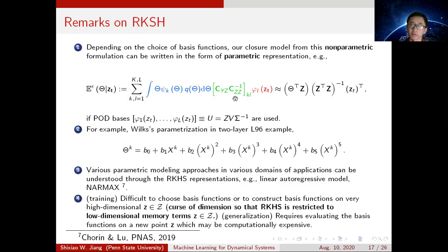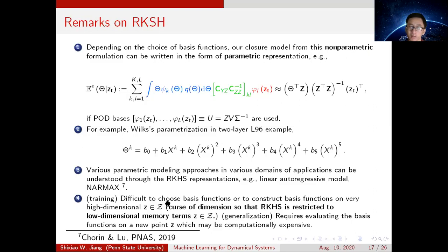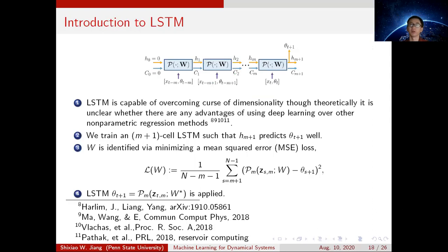For many other previous studies, a lot of parametric representations can be understood from our RKHS non-parametric formulation — like the linear autoregressive model or NARMAX. However, RKHS still suffers from the curse of dimensionality: if Z lives in a high-dimensional space, it is very difficult to construct the basis functions and to evaluate at a new point Z, since the decomposition is expensive. To overcome this curse of dimensionality, we will consider using the LSTM network instead.